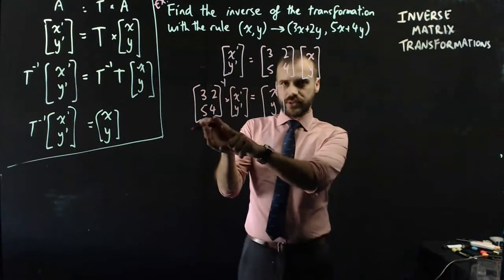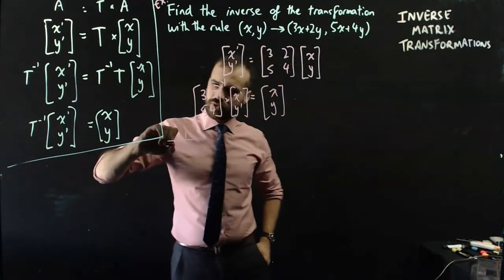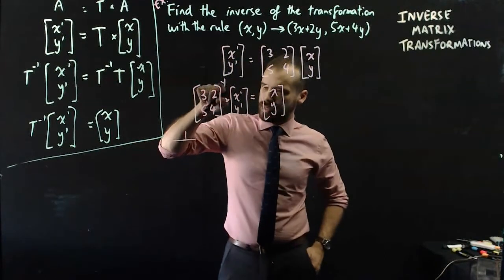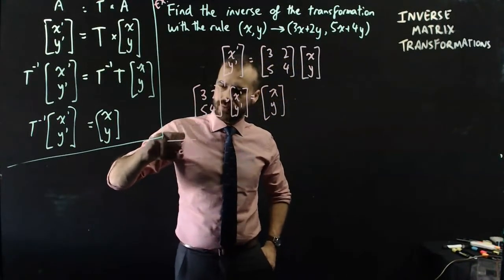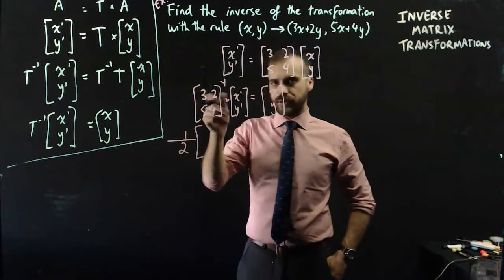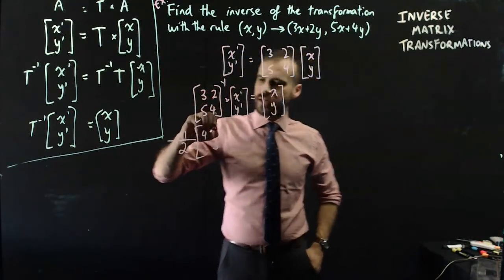And what I'm looking for is that inverse. So that's going to be 1 over 3 times 4, which is 12, minus 2 times 5, which is 10. 12 minus 10 is 2. Swap 3 and 4, so I get 4 and 3, and make 2 and 5 negative.